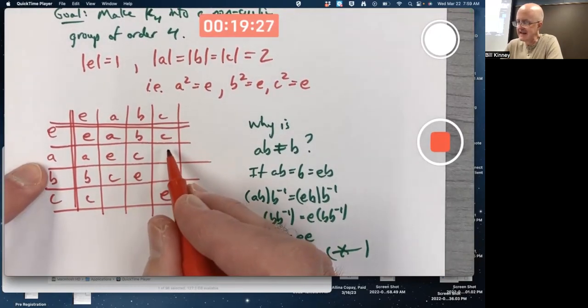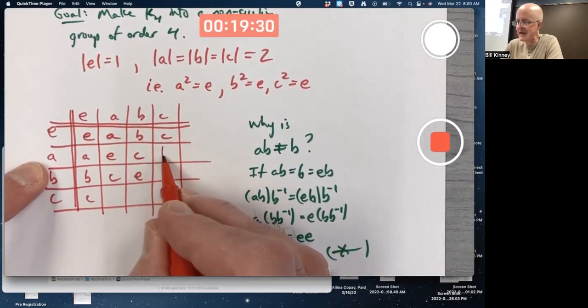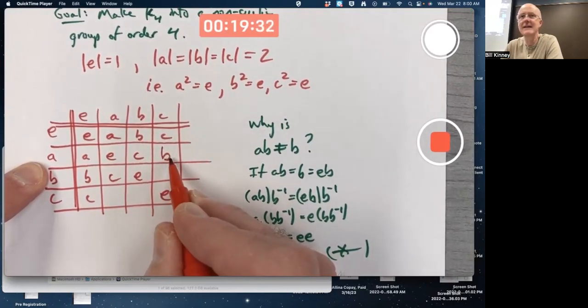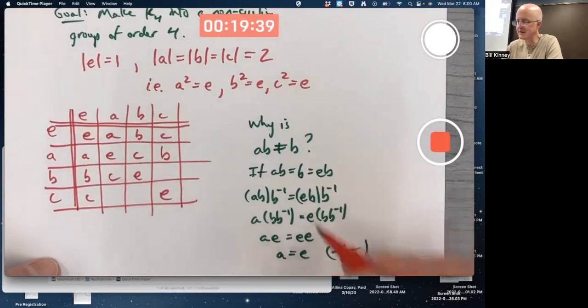What's A times C? I guess it would have to equal B. Because if A times C - I mean, again, you could give arguments similar to this.